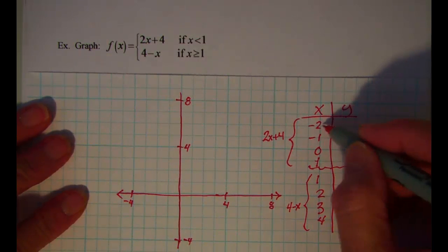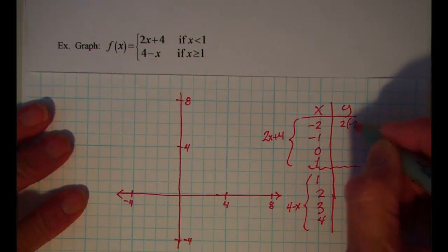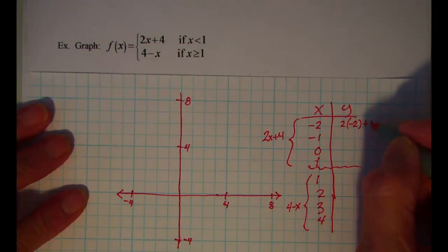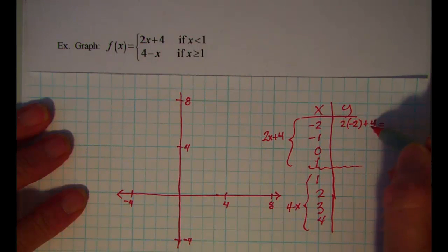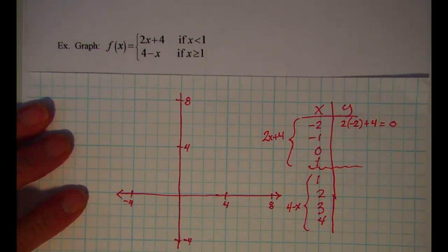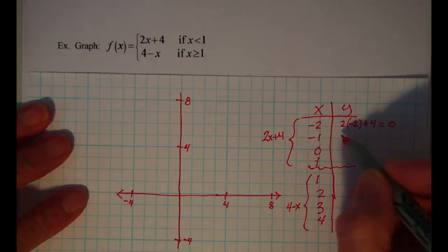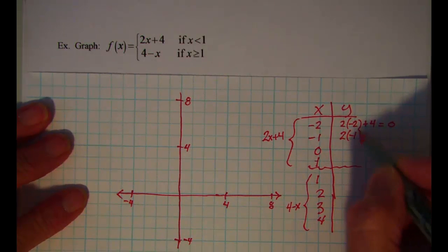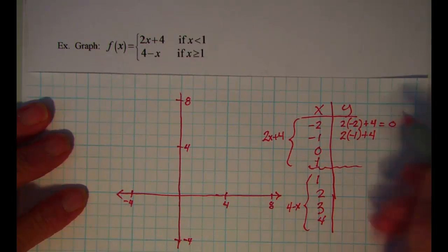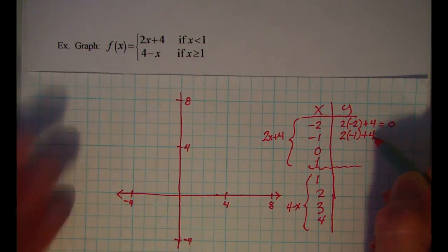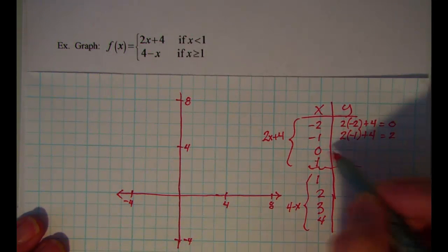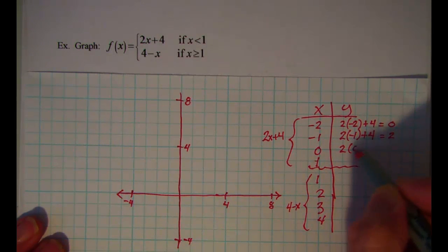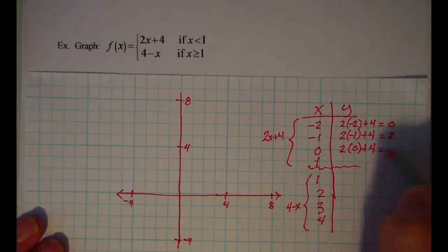Alright, so on this one I have 2 times negative 2 plus 4. This is negative 4 plus 4, which is 0. And this one I have 2 times negative 1 plus 4. So negative 2 plus 4, which is 2.